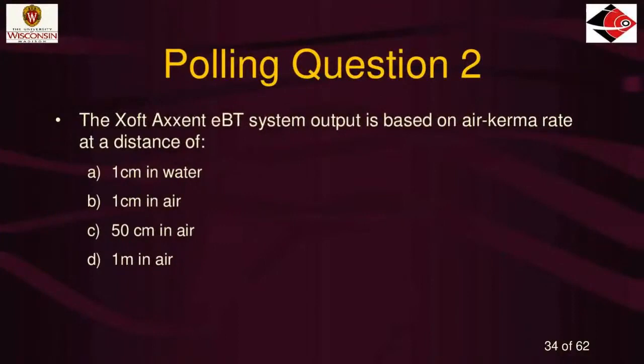Polling question two: The Zoft Accent EBT system output is based on air kerma rate at a distance of — A, one centimeter in water; B, one centimeter in air; C, 50 centimeters in air; or D, one meter in air?